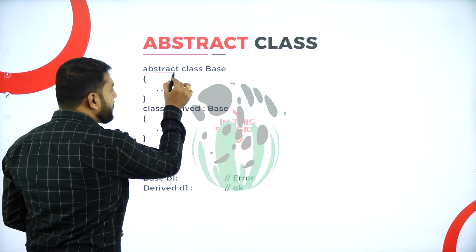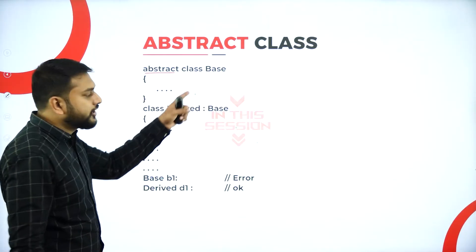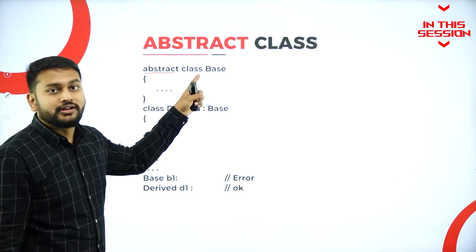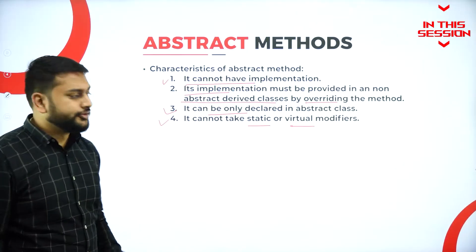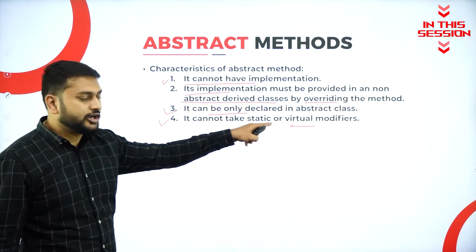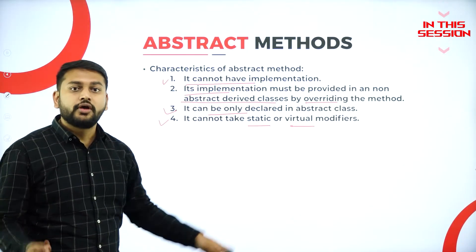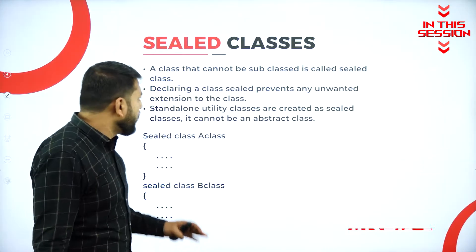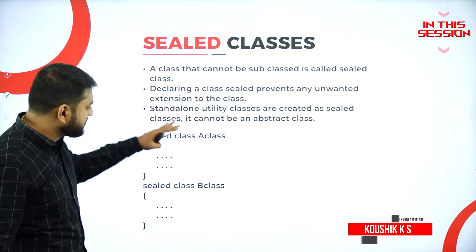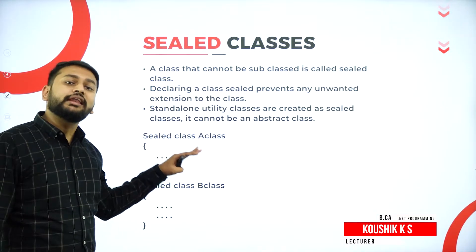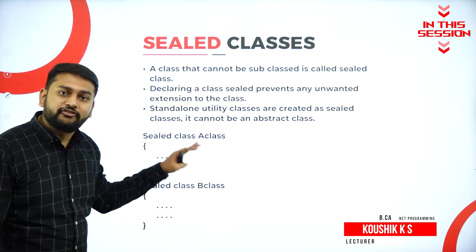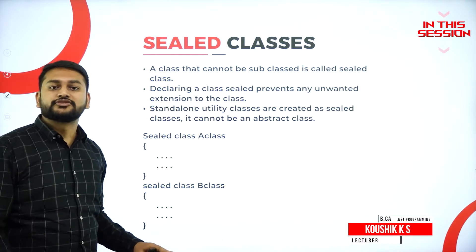I will be using a keyword called abstract before I use the keyword called class — that is the first thing you need to remember. You cannot use the keywords static and virtual modifier whenever you are having a method. Whenever I make a class sealed, I cannot inherit or derive from that class further.